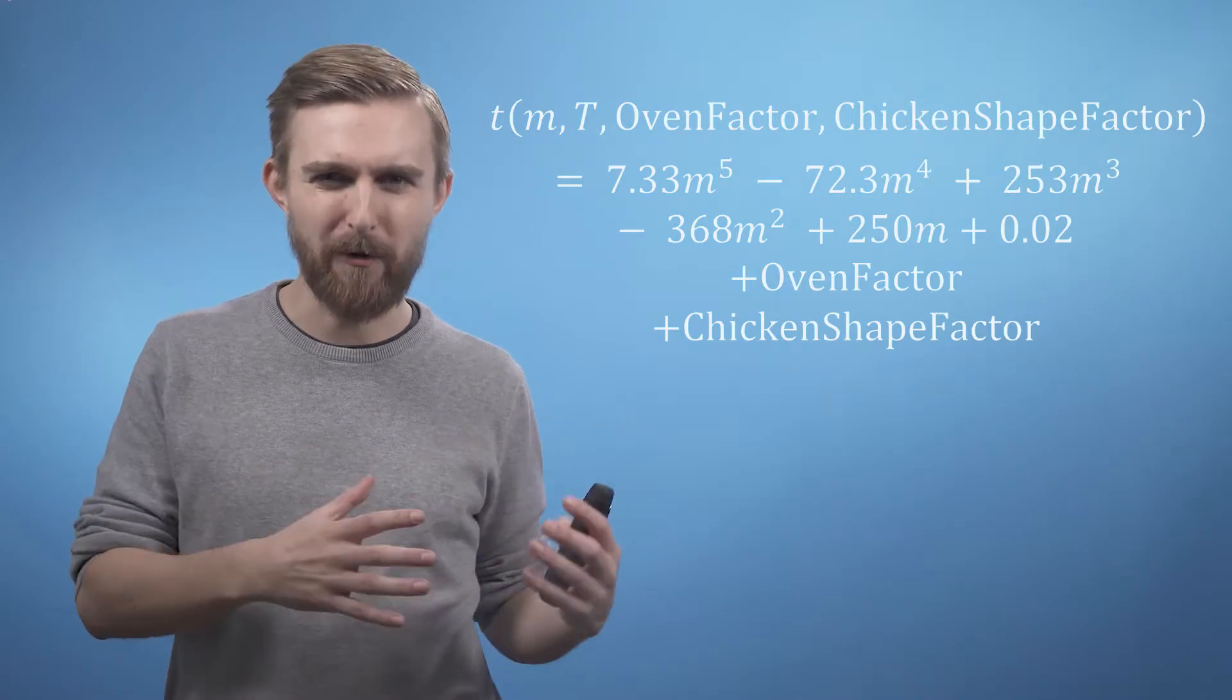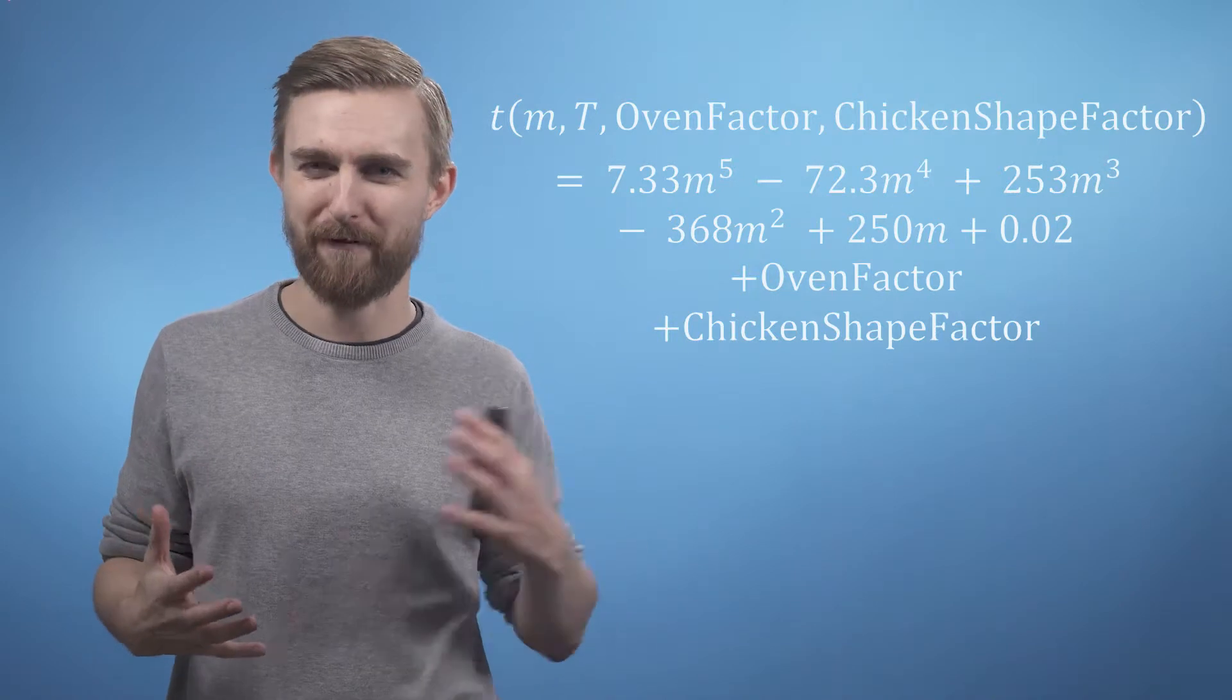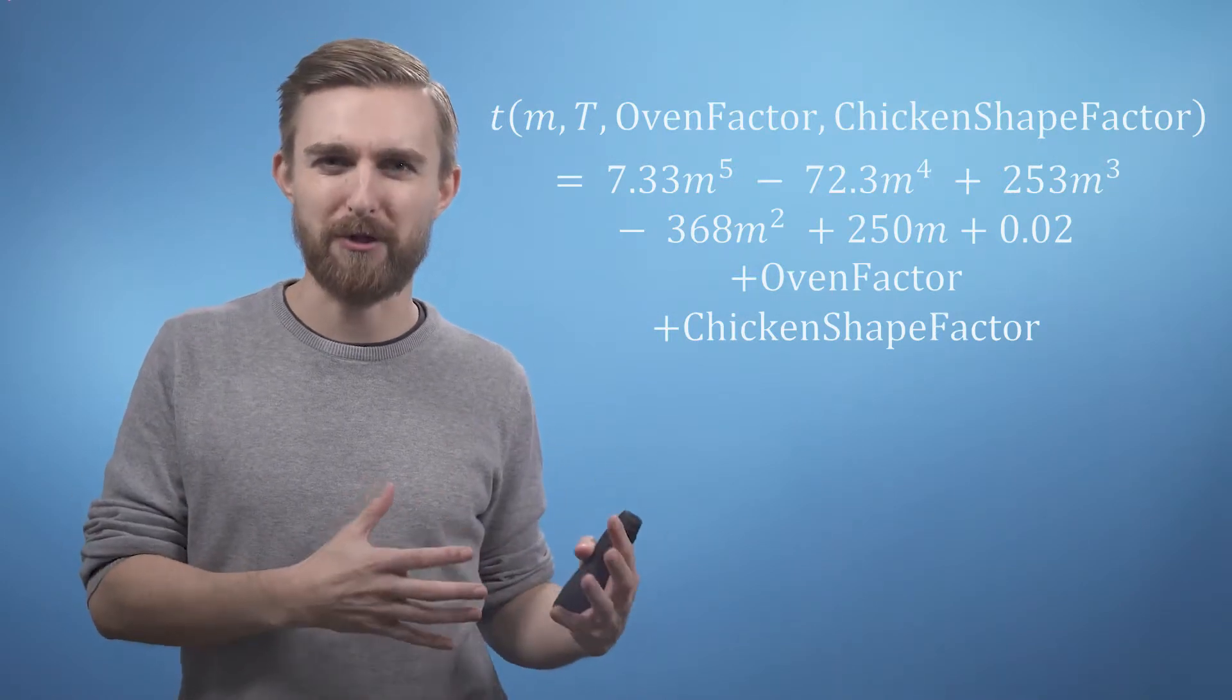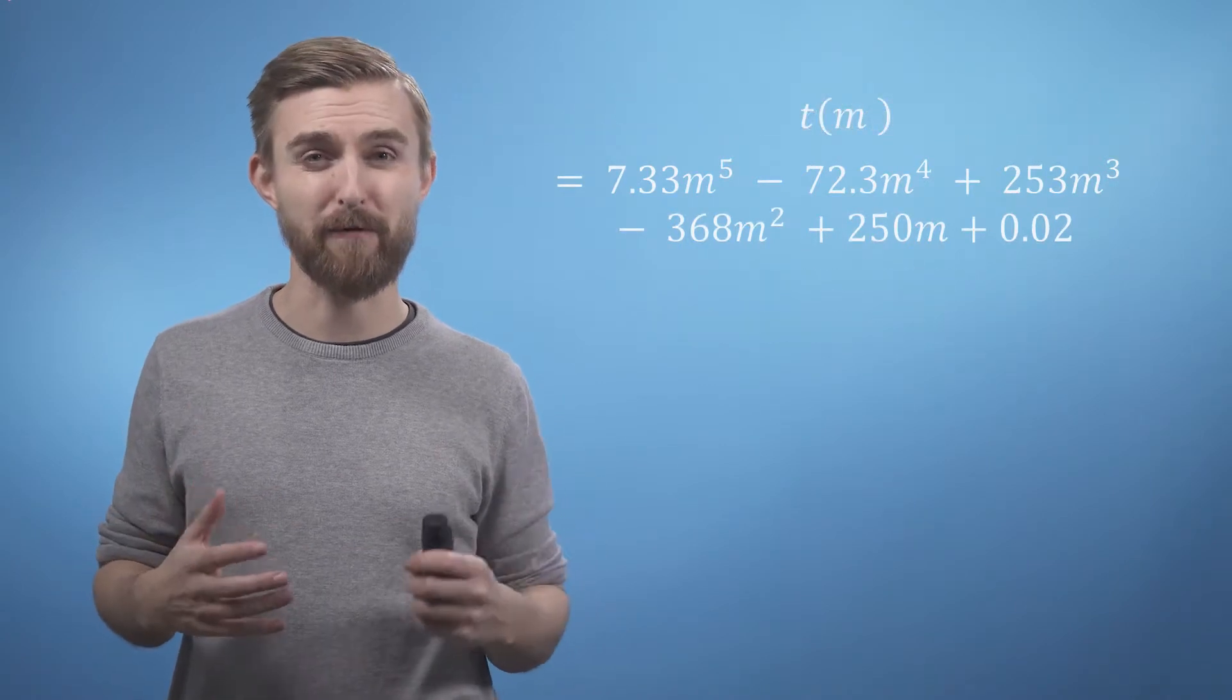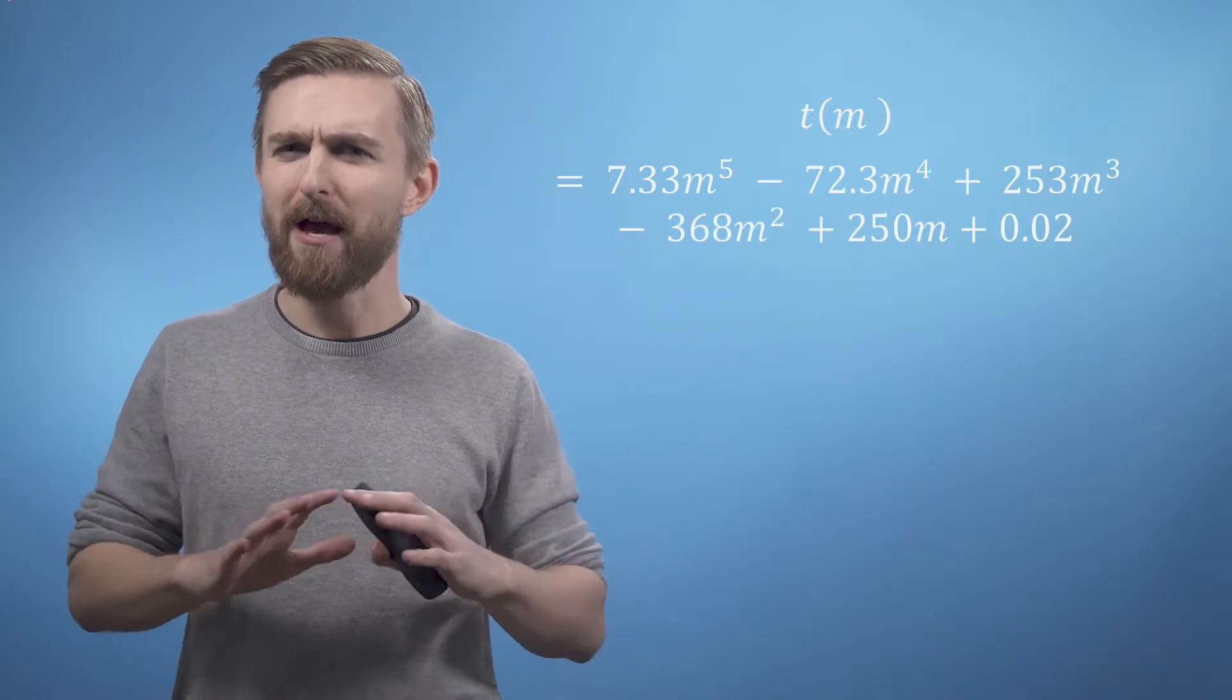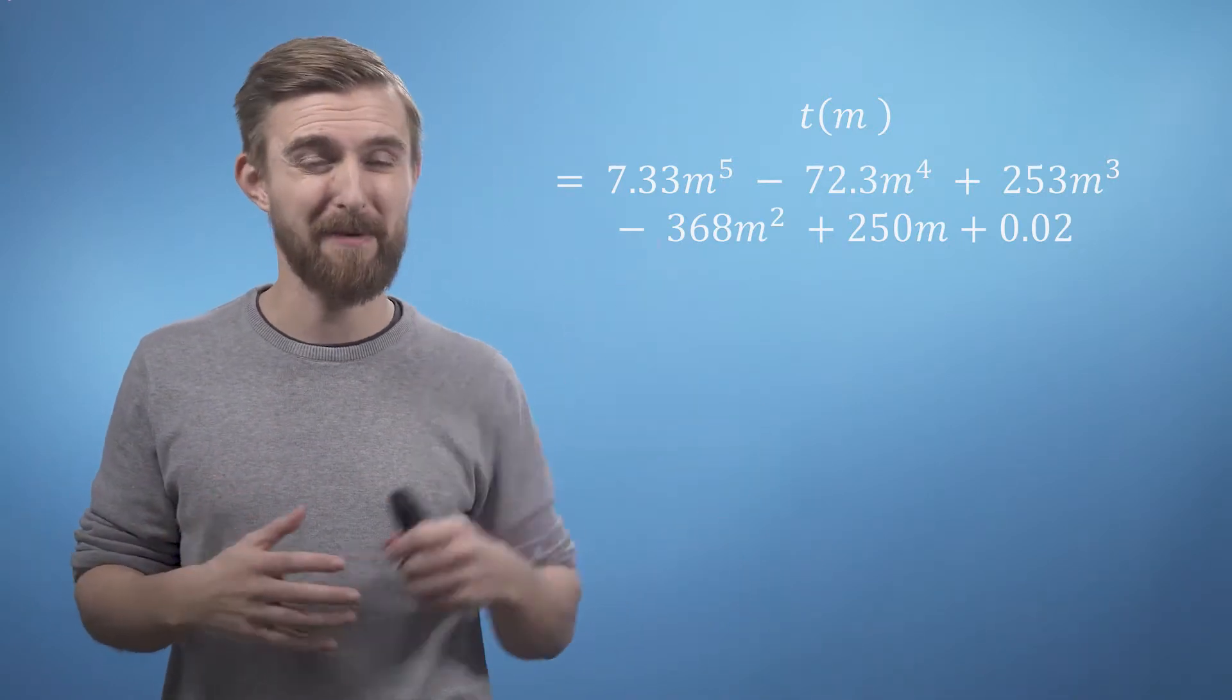Secondly, that everyone will be cooking a sufficiently similar chicken, in terms of their heat transfer properties as a function of mass, that you can also assume that these will be the same in each case. This allows us to remove two potentially problematic terms that might themselves have been a function of many other variables, but we were still left with quite a messy function.